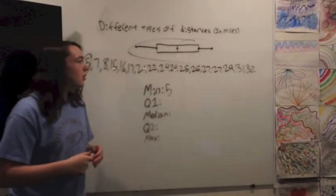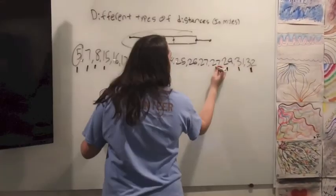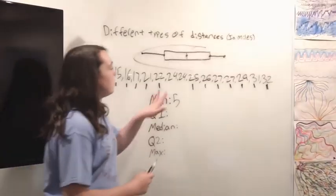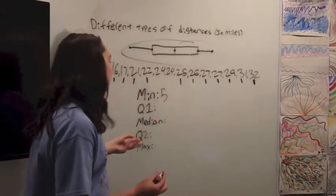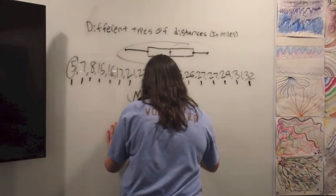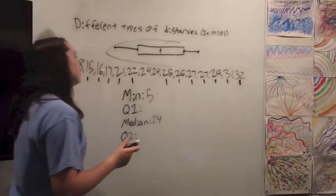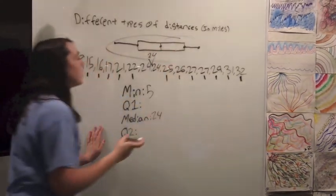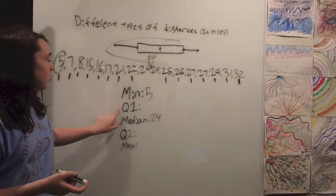So second we need to find the median. Okay, so there's two 24s which means the median is going to be 24. So you would do this and that would be 24.